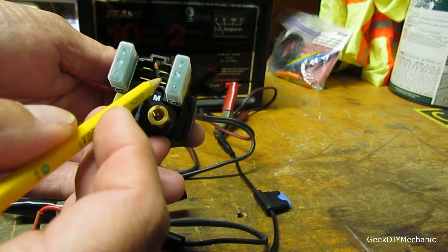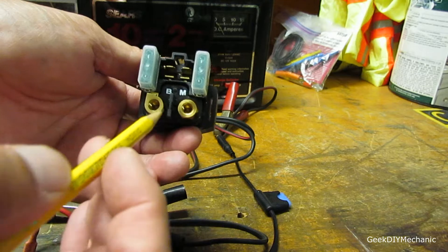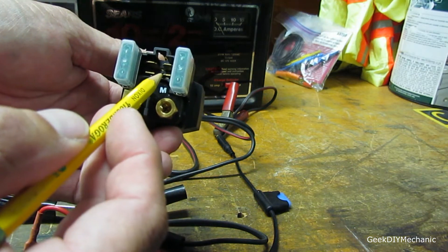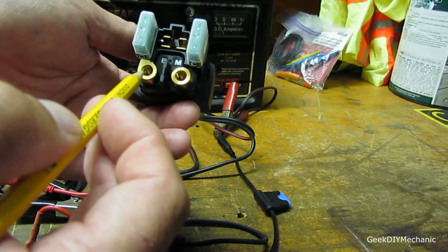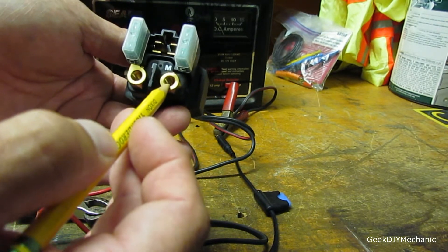These two here, terminals, are the control for the relay. If you're able to pass current through it, you'll close the relay allowing power to go from here to here.